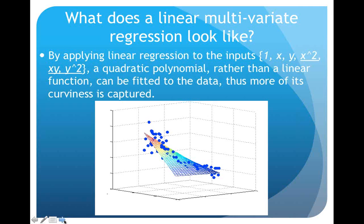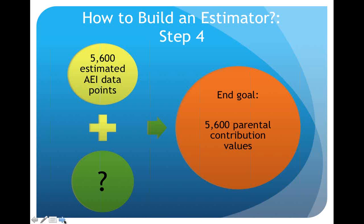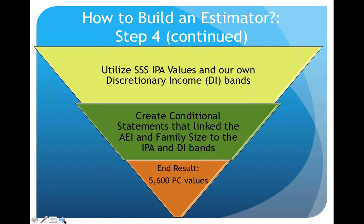Now I had my 5,600 estimated points, and my end goal was to get 5,600 parental contribution values. I have ten income bands. We created conditional statements that linked adjusted effective income numbers and family size to the income protection allowance and discretionary bands. A colleague named Amanda Bonesack helped build this spreadsheet so that based on all the family size and AEI numbers, it would autofill with the correct income protection allowance and discretionary band. The end result was 5,600 parental contribution values.